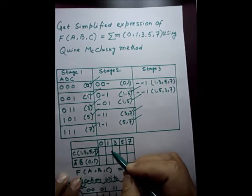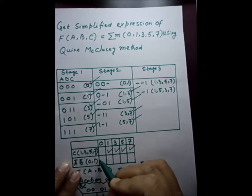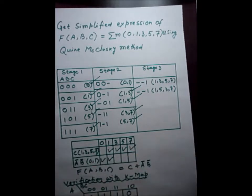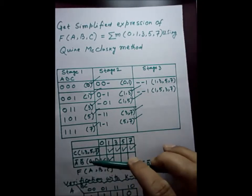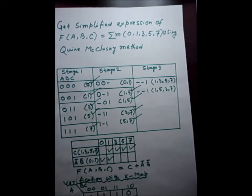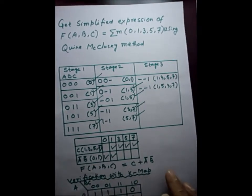After that, whatever minterms are used we make a tick mark: 1, 3, 5, 7. And in this case, only 0 and 1 have been used. After identifying the prime implicants, we go for essential prime implicants. We can eliminate some prime implicants if all minterms are already covered by others, but in this case, 0 is not included in C, and 0 is not included in A̅B̅ either. Therefore both are prime implicants and both are essential prime implicants. The sum of essential prime implicants is the simplified Boolean expression: C + A̅B̅. That is the result by the Quine-McCluskey method.